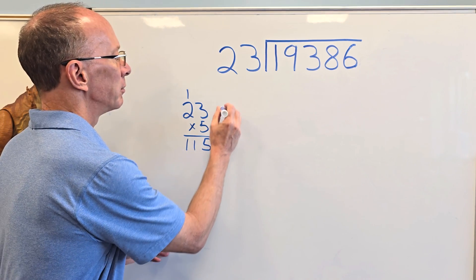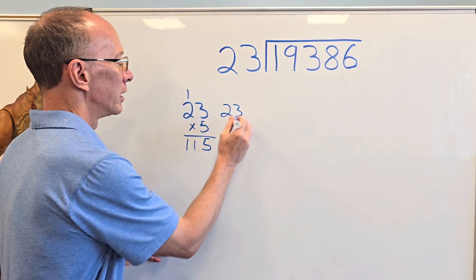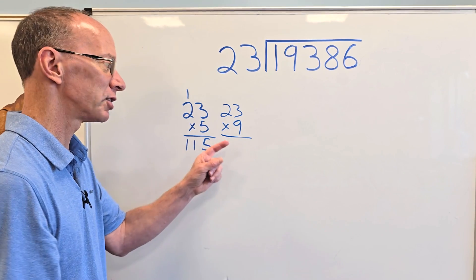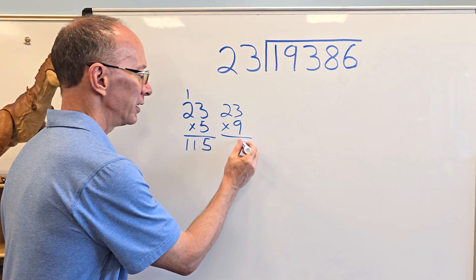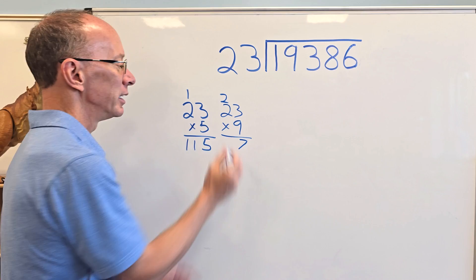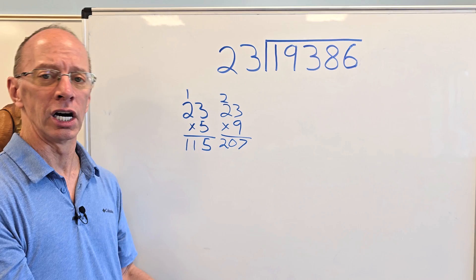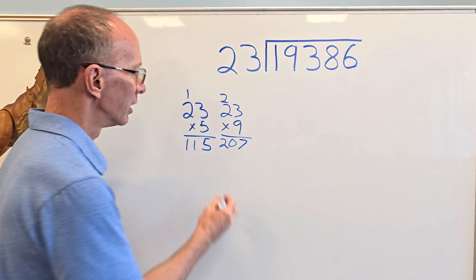So I'm going to try, let me see here, 23 times nine. That's probably pretty big, but let's try it. Nine times three, 27. The two up here. Nine times two is 18. 19, 20. That is too high. We got to bring it down there a little bit.